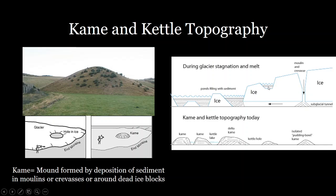Additionally, we can have kames. Kames are kind of the opposite of kettles: where kettles form where there was an excess of ice as the glacier retreated, kames form where there was a lack of ice — a hole in the glacier. That hole allowed sediment to drop in and deposit, whether from a moulin, a crevasse, or a differential flow path that allowed sediment to blow in or flow from the top of the glacier. As the glacier retreats, that deposit of sediment remains as a mound — that's a kame.